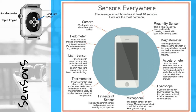Fingerprint sensor: Allows you to log on to the phone. Microphone: Makes it possible for others to hear what you are saying. Gyroscope: If you take non-blurry photos, you have the gyroscope to thank — it corrects camera shake. Accelerometer: Determines how your phone knows which way you're holding it — vertical or horizontal. Magnetometer: Measures the strength of the magnetic field around the device to determine direction. Proximity sensor: Keeps you from accidentally pressing buttons on your cheek during a call.